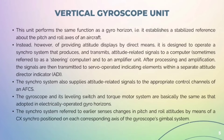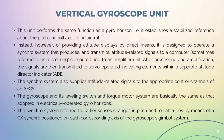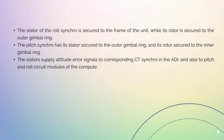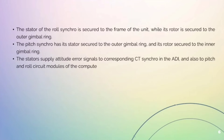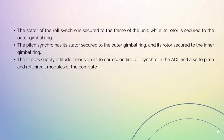The gyroscope and its leveling switch and torque motor system are basically the same as that adopted in electrically operated gyro-horizons. The synchro system senses changes in the pitch and roll attitude by means of the CX synchro positioned on each corresponding axis of the gyroscopic gimbal system. The stator of the roll synchro is secured to the frame of the unit while its rotor is secured to the outer gimbal ring. The pitch synchro has its stator secured to the outer gimbal ring and its rotor secured to the inner gimbal ring. The stator supplies attitude-error signals to corresponding CT synchros in the ADI and also to the pitch and roll circuit modules of the computer.